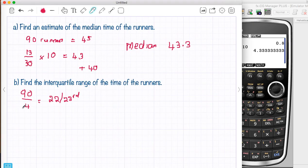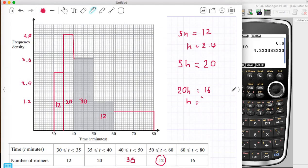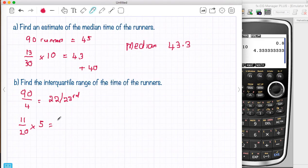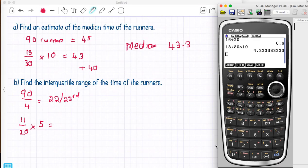So similar to what we did here. We find the bar that it's in. We say we need to go in 11 more out of 20 because there were 20 frequency in that bar. The width of that bar is 5. Okay, the width of that bar is 5. So we're going to have 11 divided by 20 times 5.